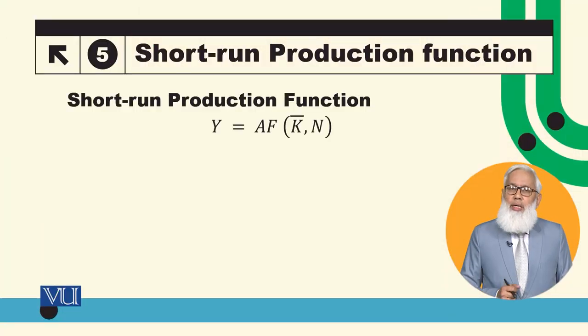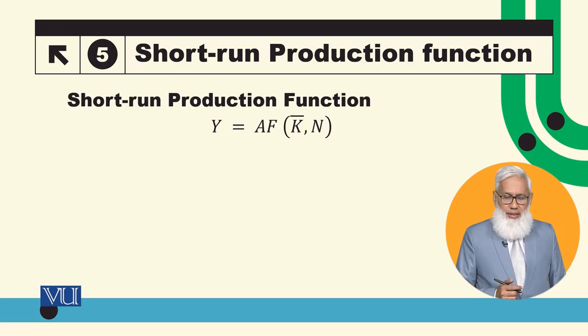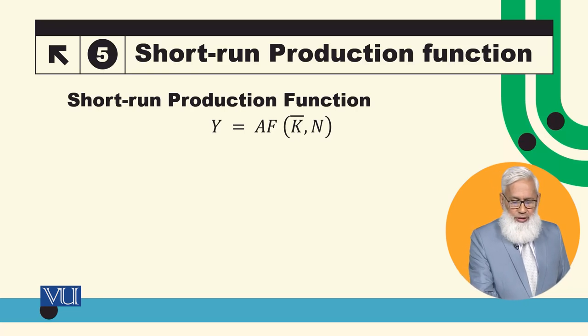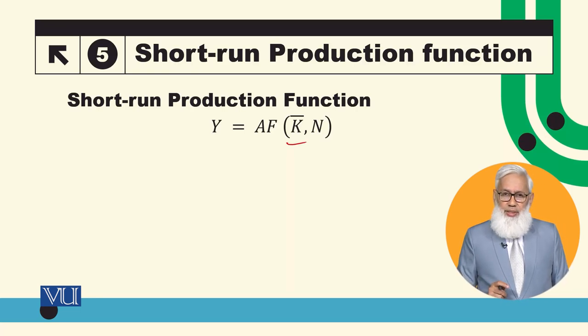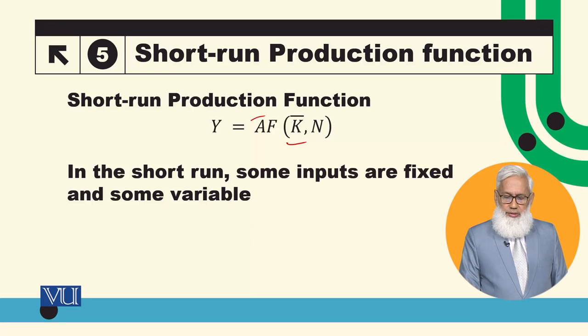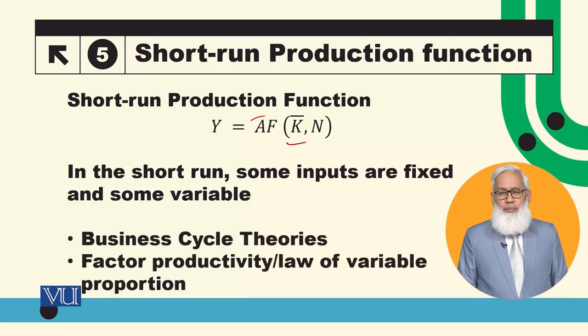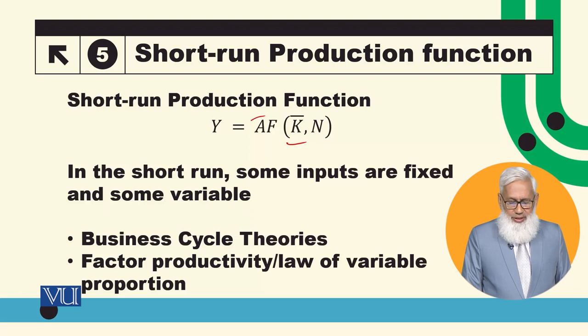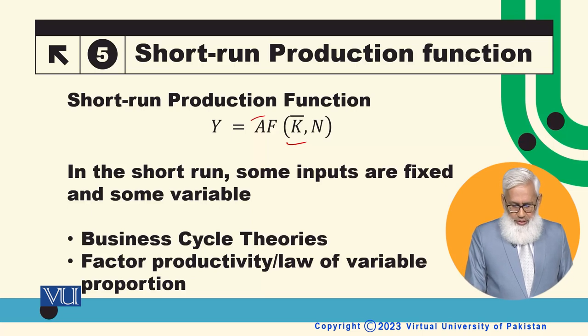The second is the short run production function. In short run, for example, K is constant. This means we are keeping K constant and A is also assumed constant in the short run. Technology has not changed, capital stock is fixed. Just by changing the value of N, we will see how output changes. This is short run production function. We use this specifically in business cycle theories and when discussing factor productivity and law of variable proportion.